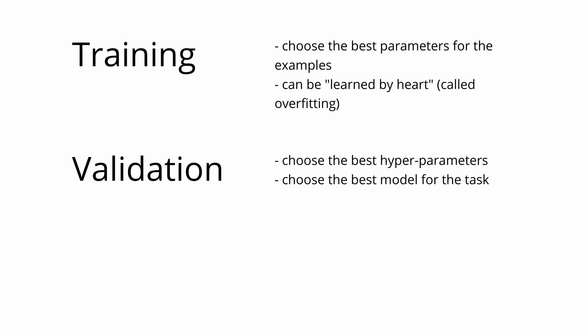Let's recap this in more machine learning terms. The training data set is used to choose the best parameters for the examples that you have but the issue is that they can be learned by heart which is also called overfitting in machine learning. The validation data set on the other hand is used to choose the best hyper parameters for example how many layers your neural network has or how many parameters or degrees your linear regression has. It can also be used to compare completely different models like linear regression versus neural networks for example.